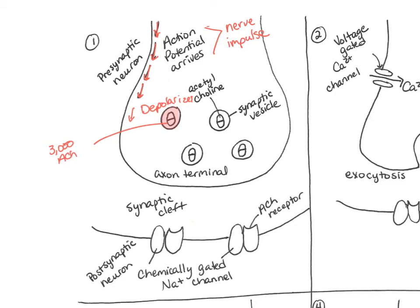We also see the synaptic cleft — the space between the synaptic terminal of the presynaptic neuron and the cell body of the postsynaptic neuron. On the postsynaptic cell body we see chemically regulated sodium channels. On these gated channels there is a receptor for acetylcholine, called the acetylcholine receptor. So an action potential has traveled to the synaptic terminal and depolarized it.